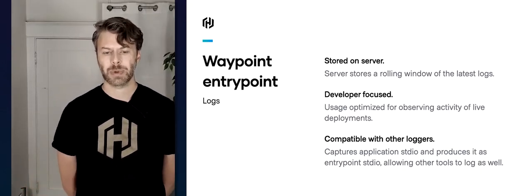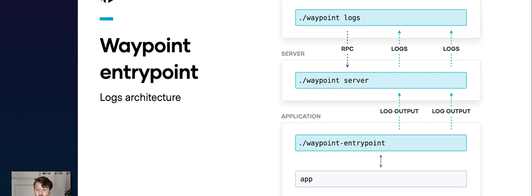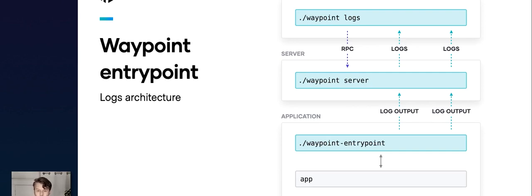Let's look at what that log flow looks like. The application has already started up and connected to the server, and the client has said 'I would like to get some logs.' As soon as the application starts to log things, it sends that log output up to the server. The server sees there's a currently connected client interested in logs and sends them directly on. It continues with all future log entries, so you've got logs streaming nicely from the application all the way to the client through the server.